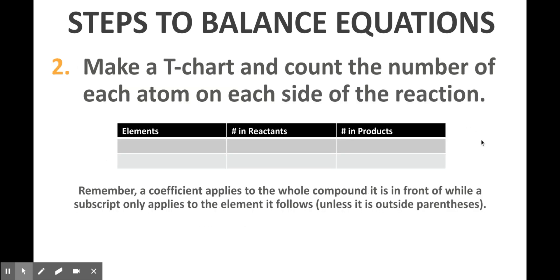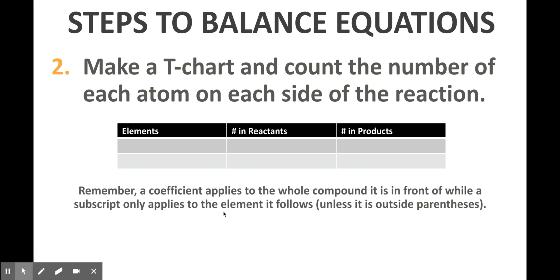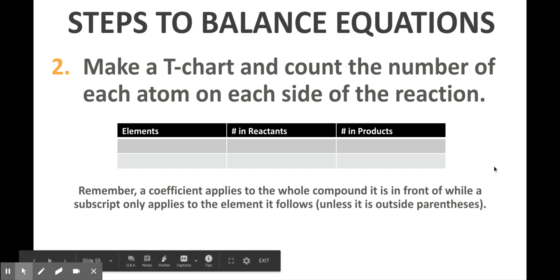Once you have a working accurate chemical equation, you're going to make a t-chart that will help you count how many atoms of each element involved are on the reactant side and how many are on the product side. This is also the structure we use to then balance the equation, and this is really where it's important to know how coefficients and subscripts are different and how they apply differently to compounds.